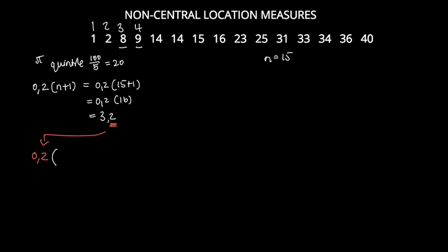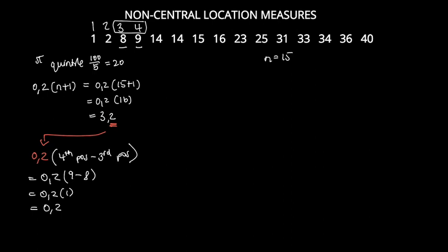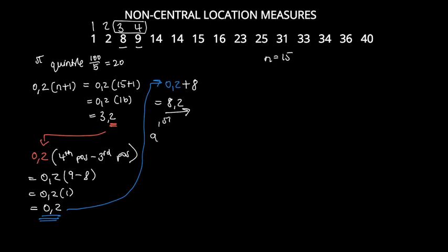We multiply 0.2 by the difference between the fourth and third positions: 9 minus 8 equals 1, so 0.2 multiplied by 1 gives 0.2. We then add this to the third data value: 8 plus 0.2 equals 8.2. That is the first quintile of our data set — it's larger than 8 but smaller than 9.